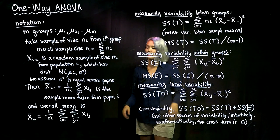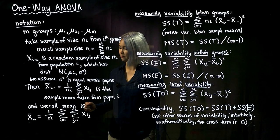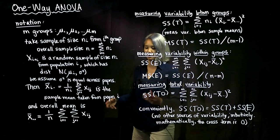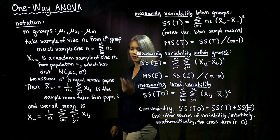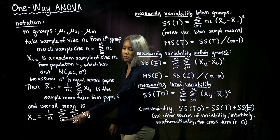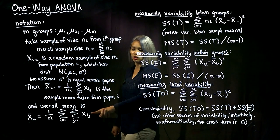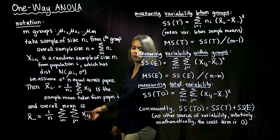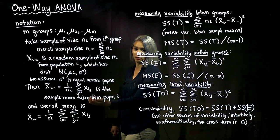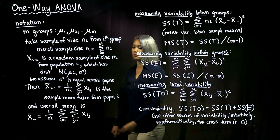The overall mean is denoted x-bar with two dots in the subscript, because we're averaging over both subscripts. We divide by our overall sample size n and add up all of the observations. The way to think about it: go to each group — say population 1 where i equals 1 — and add up all the measurements x_{i,1}, x_{i,2}, x_{i,3}, and so on. Then add up measurements from population 2, and so on. Once we've added up all measurements and divided by the sample size, that's our overall mean.